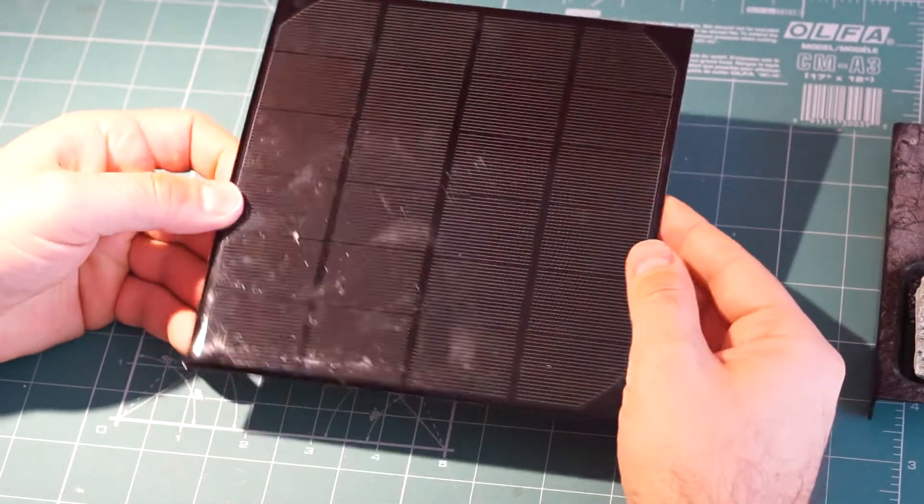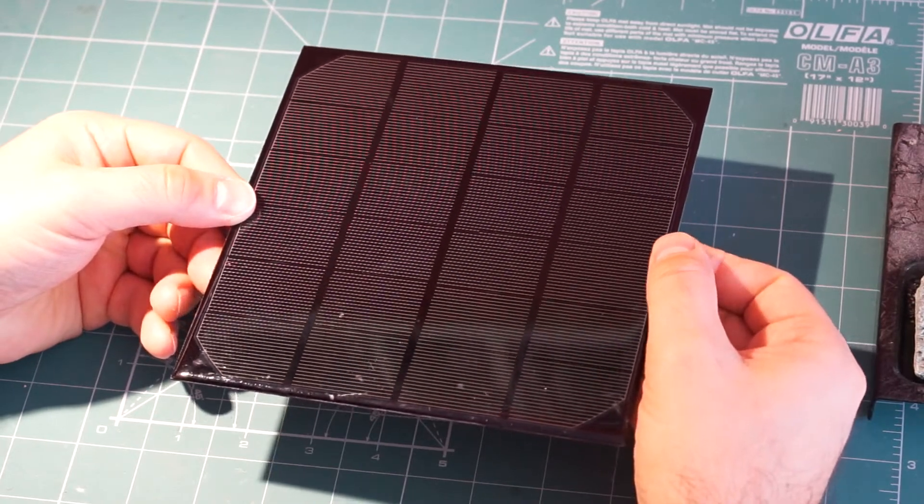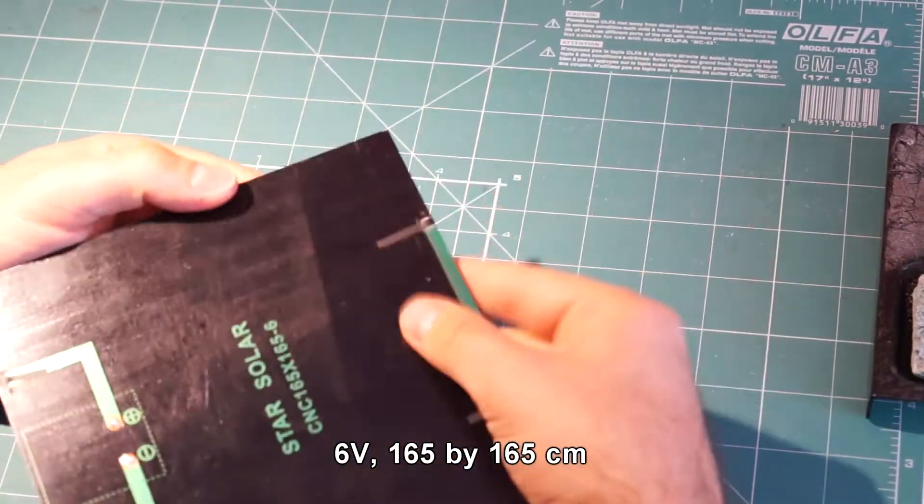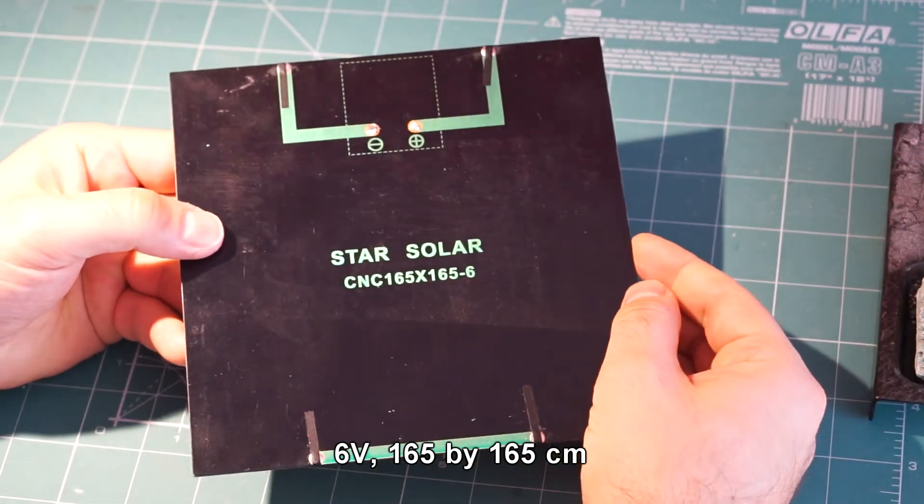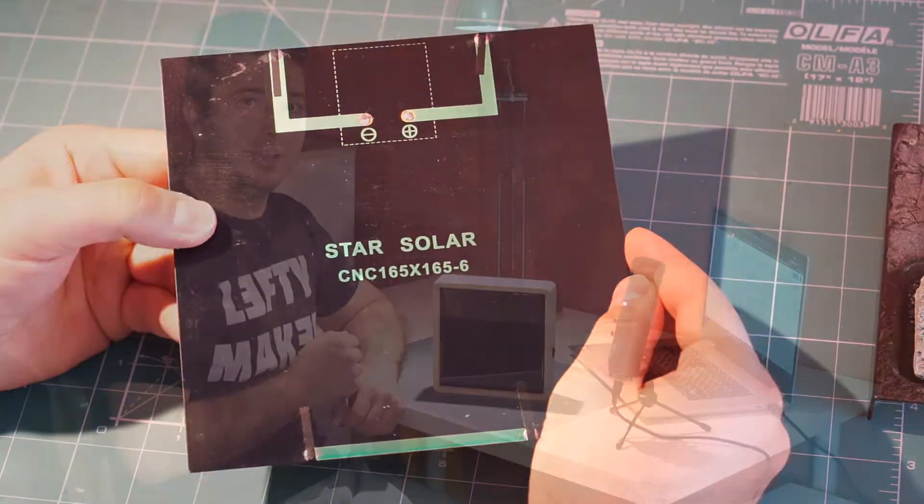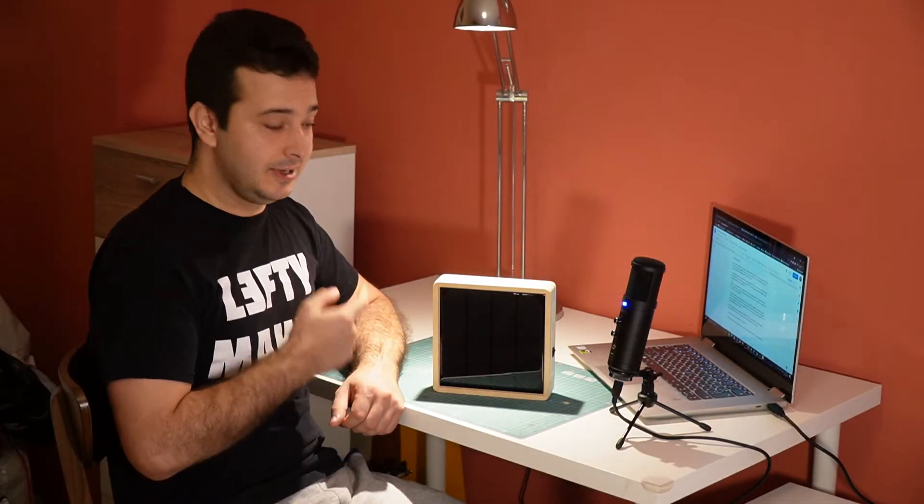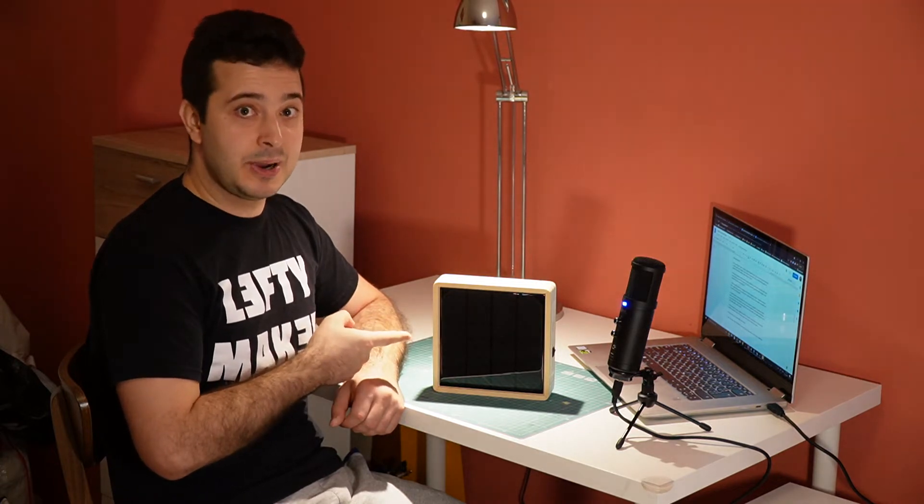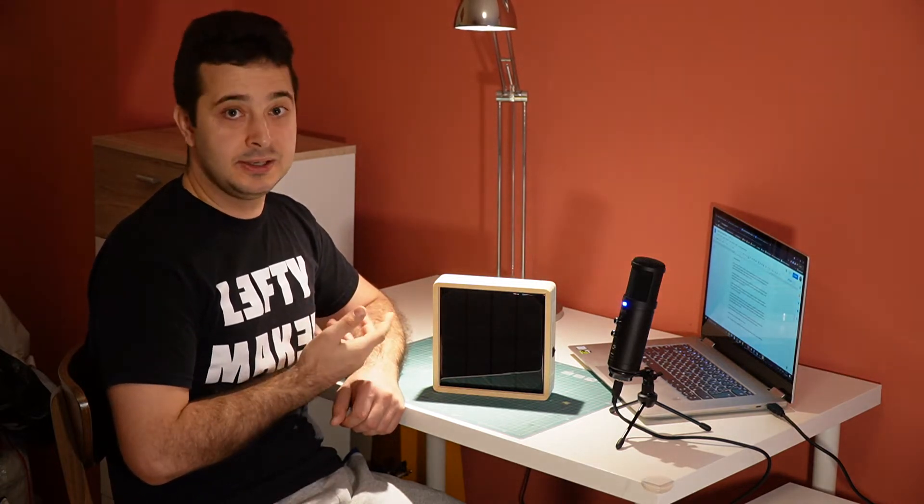Now back to the project. For my solar power bank, I chose to use this relatively large solar cell which can provide about 3 watts under direct sunlight. I know this may not sound like much, but it is enough to charge the built-in 8000 mAh battery in 10 hours under ideal conditions.